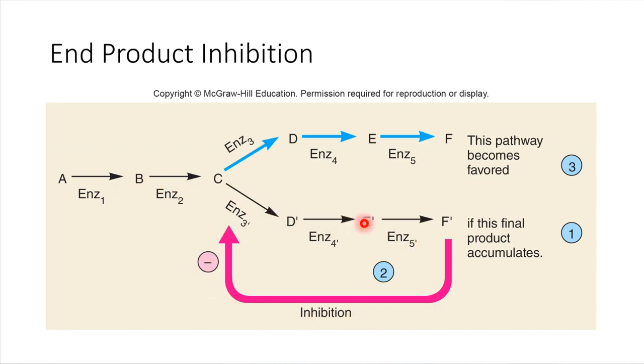We were heading down this pathway, F prime was accumulating, but once its level started to get a little too high, its own presence acts to deactivate this pathway. The levels will no longer be increasing—they'll either stay steady or start to decline. In the end, this is the only pathway that can be taken. We say this pathway is favored and this one is inhibited. That's end product inhibition. This was the end product, and it worked to inhibit an earlier enzyme in the pathway.